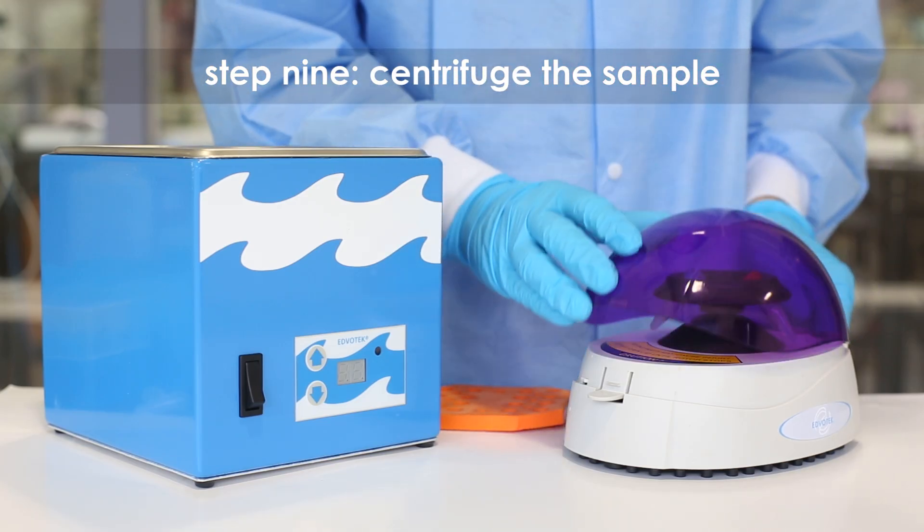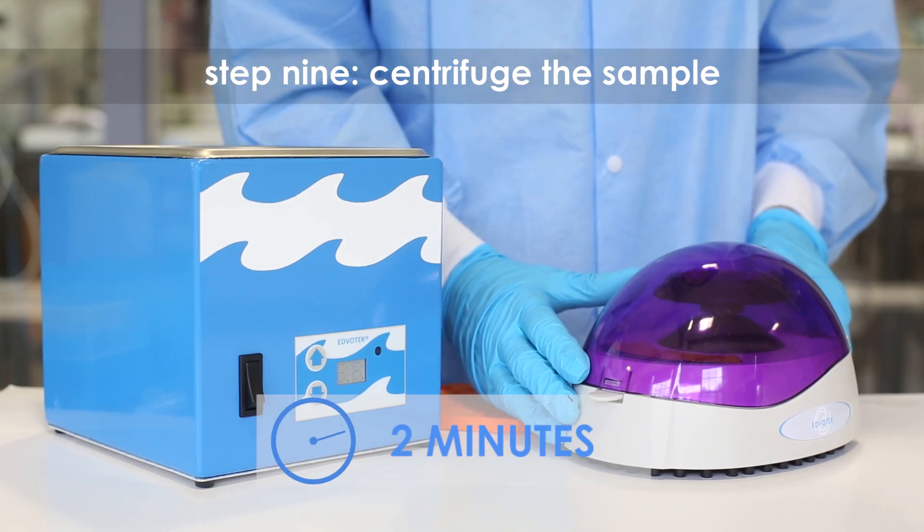Step 9: Centrifuge the cellular lysate for 2 minutes at low speed.